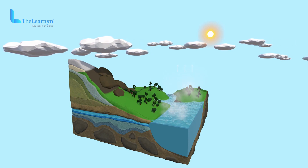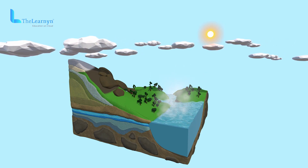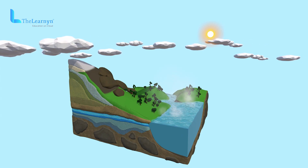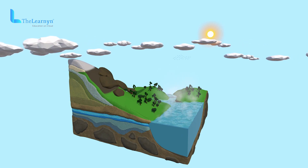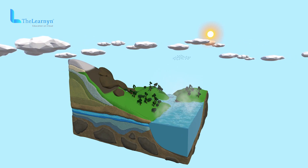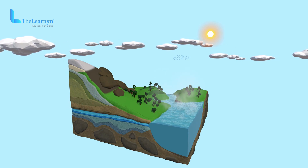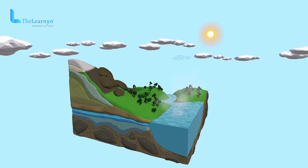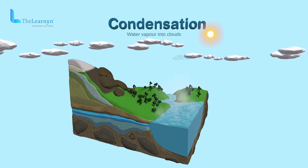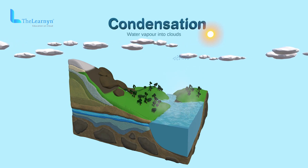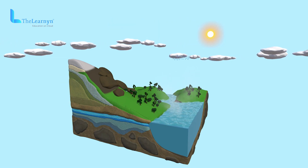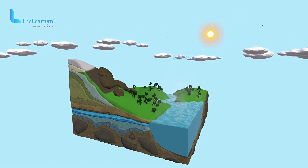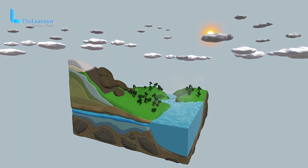In the sky, the water vapor cools and changes back into tiny water droplets. This change of water vapor into water droplets is called condensation, and it's the opposite of evaporation. Clouds are made up of tiny water droplets.